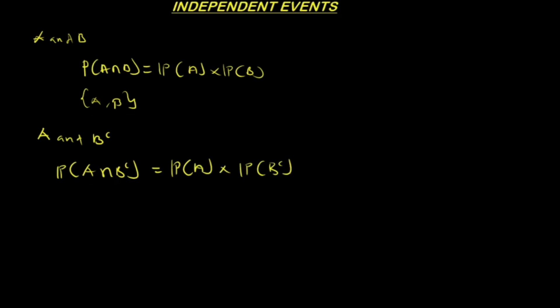We could also apply: if A and B are independent, then A complement intersection B complement is also independent. Then we have the probability of A complement times the probability of B complement, which signifies the independent events.